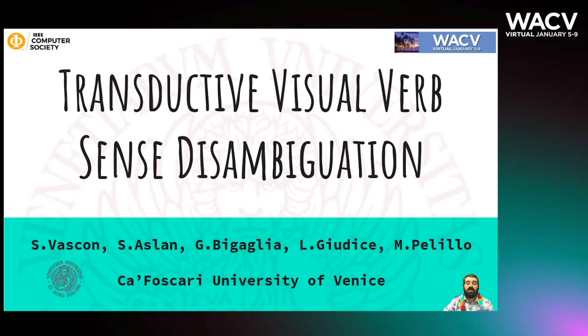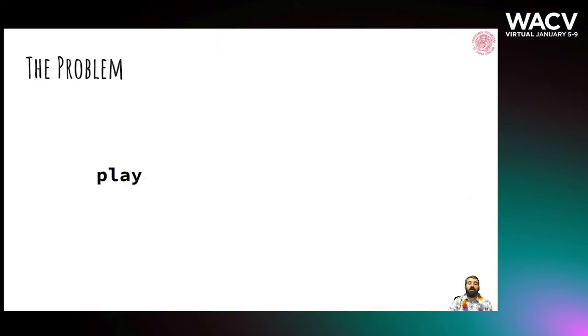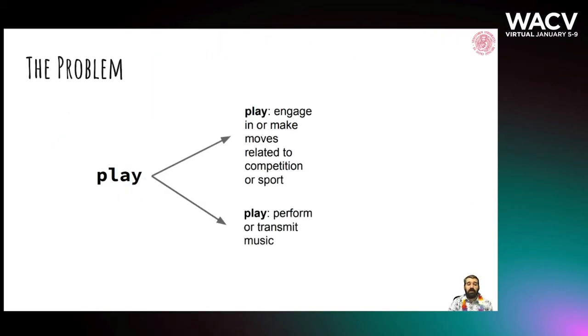Hi, in this video I'm presenting our work: a new model for visual verb sense disambiguation. If I'm telling you the verb 'play', this may have potentially different meanings, like engaging in a sport or performing some music.